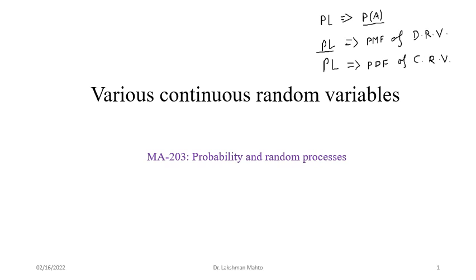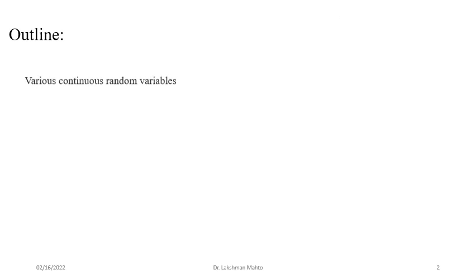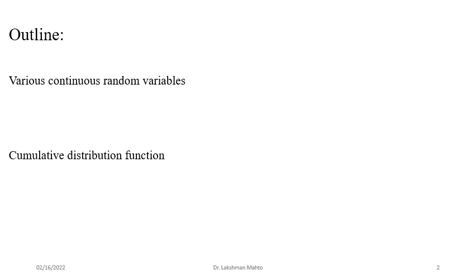Coming to the outline of today's lecture: first, we will discuss various continuous random variables. We have already seen the uniform random variable, and after that we will look at further kinds of random variables. Our approach will be the unification of probability patterns for discrete and continuous.